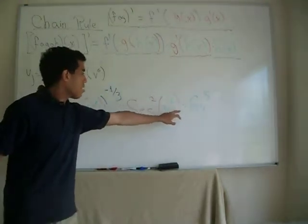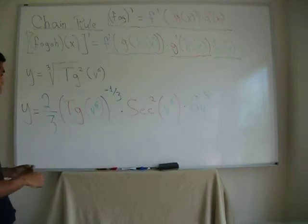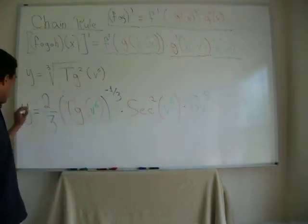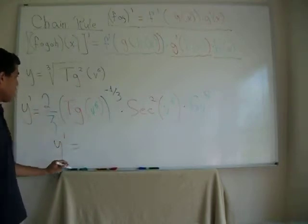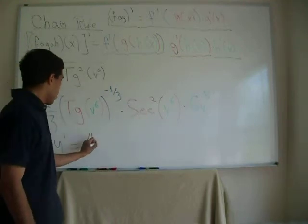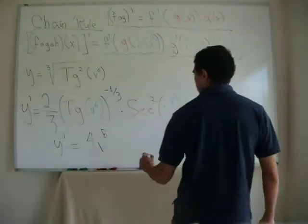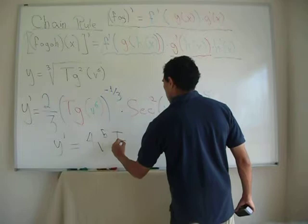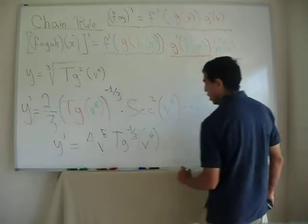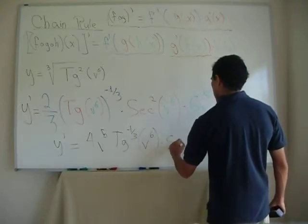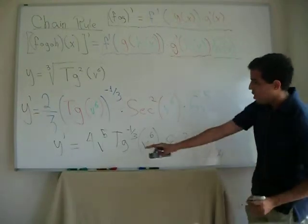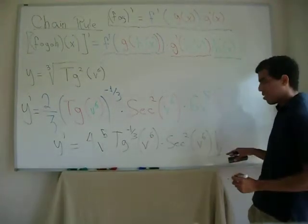6 times 2 is 12. 12 over 3, 4. So, let's move it a little bit to the center. y prime is going to be 6 times 2, 12 over 3, 4. Let's put the v in front. v⁵. Times tangent power to 1/3. Evaluate it. v⁶. Times secant squared of v⁶. All I did was rearrange and organize. And there you go. This is the solution for the problem.